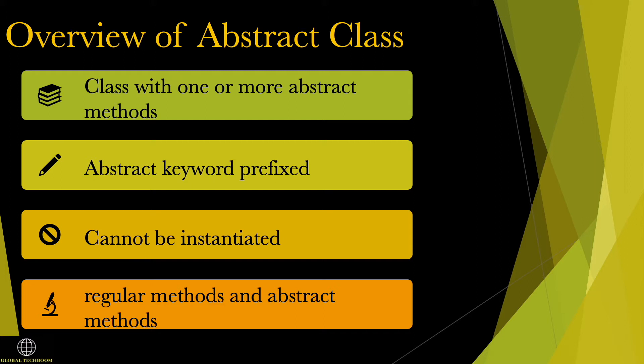Although abstract classes and interfaces seem similar in some ways, there are some key differences between them. Abstract class allows us to create functionality that subclasses can implement, and it can have one or more abstract methods defined in it. In the case of an interface, it allows us only to define functionality.